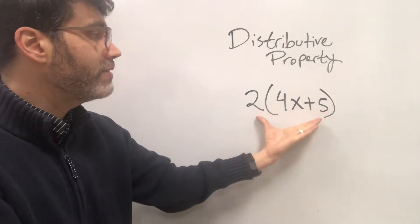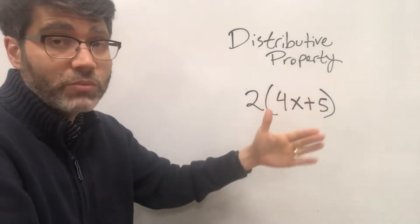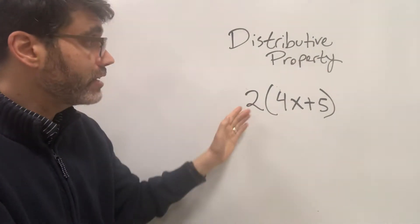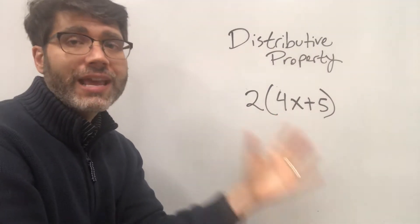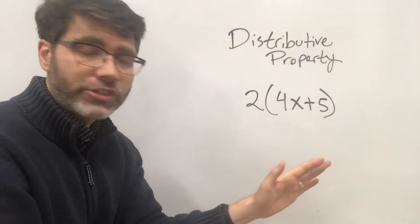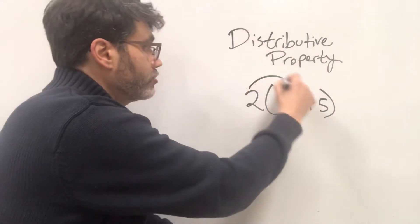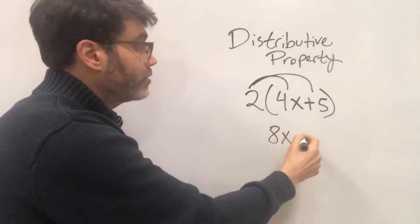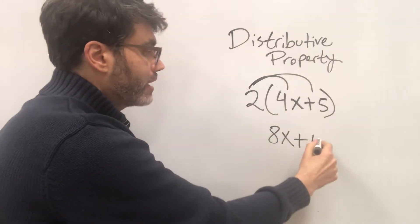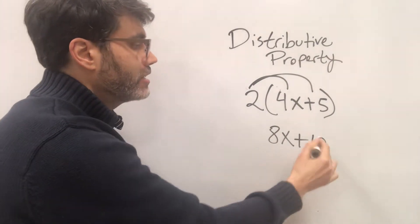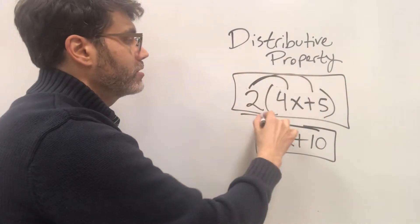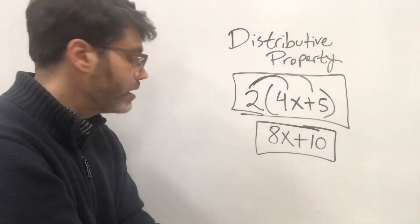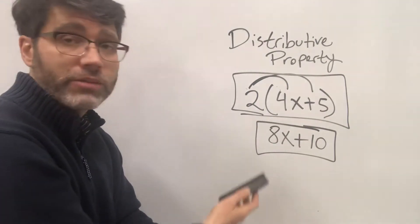While PEMDAS leaves us stuck — because we need to do what's in parentheses before we multiply but can't combine unlike terms — the distributive property lets us keep working on the expression and still have it exactly equivalent. So we distribute over everything: 2 times 4x is 8x, we bring down the addition sign, and 2 times 5 is 10. So 8x plus 10 is an equivalent expression to 2 times the quantity 4x plus 5. These are exactly equal to each other.